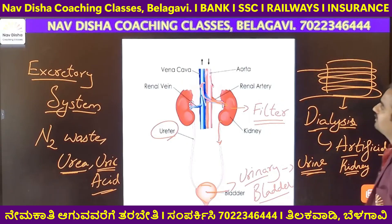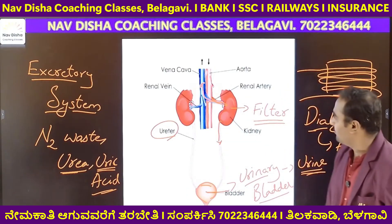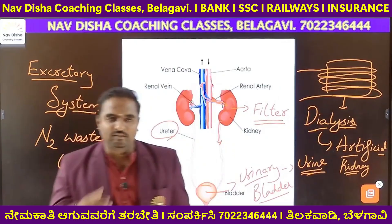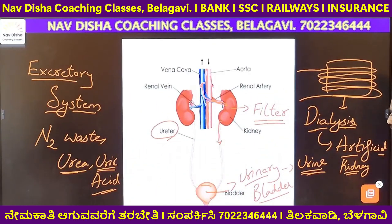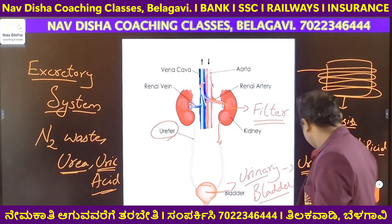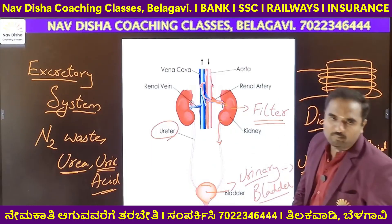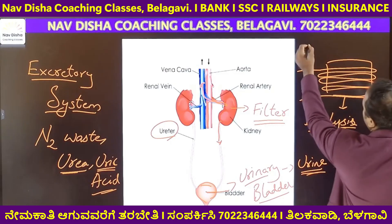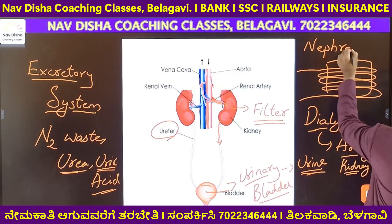After the urinary bladder comes the urethra — that is the function of the kidney or excretory system. The kidney filters through a structure. What is it in the kidney that filters? The body is made up of cells, and there are millions of cells in the kidney. That is called the nephron.